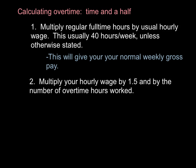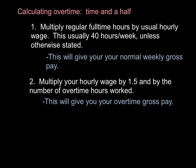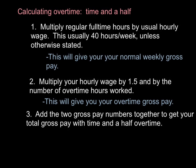Next, multiply your hourly wage by 1.5 and by the number of overtime hours worked. This will give you your overtime gross pay. Add the two gross pay numbers together to get your total gross pay with time-and-a-half overtime.